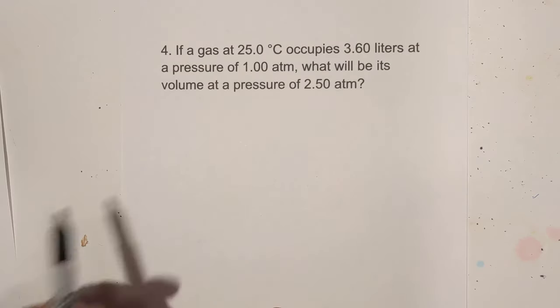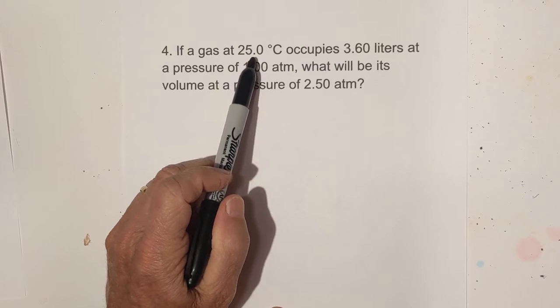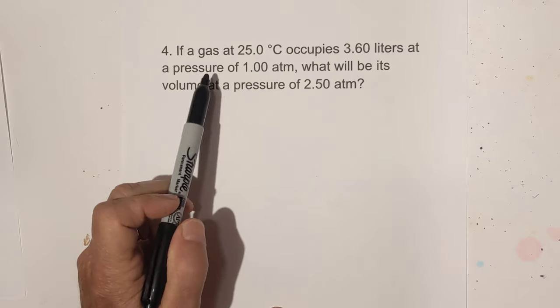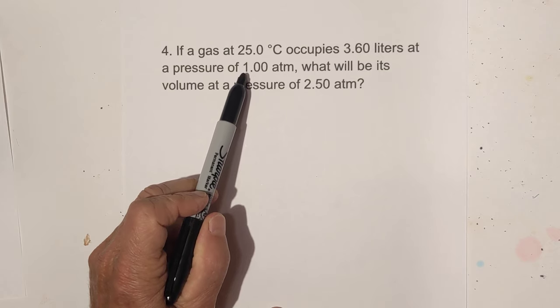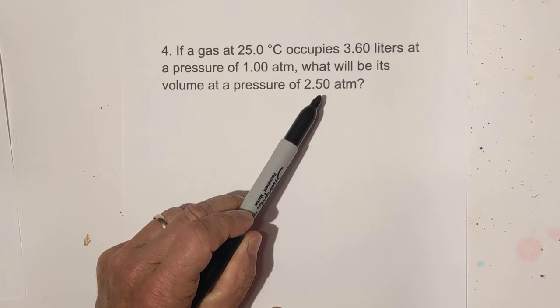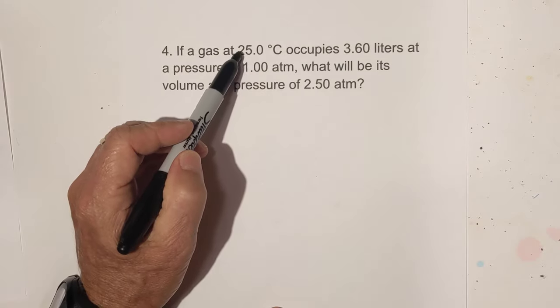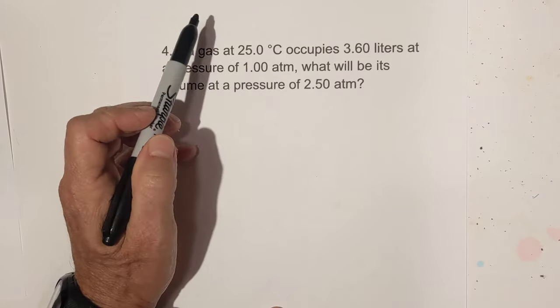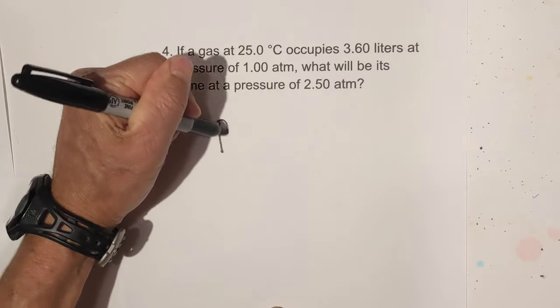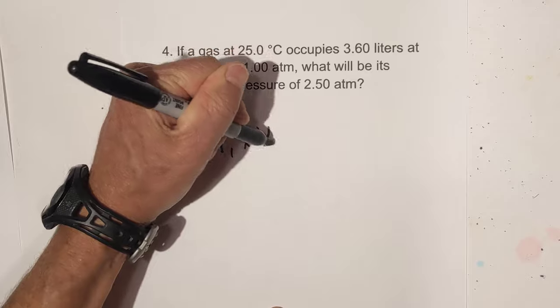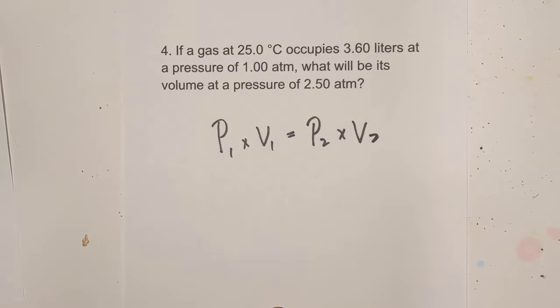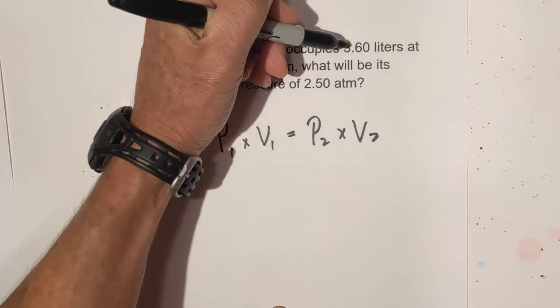Here's our final problem. If a gas is at 25 degrees Celsius, and it occupies 3.60 liters at pressure of one atmosphere, what will be its volume at a pressure of 2.5 atm? One, the 25 degrees Celsius, you don't really need that. That just tells you what the temperature is. It's not going to go in the formula P1 times V1 is equal to P2 times V2. So again, we just plug in what we have.